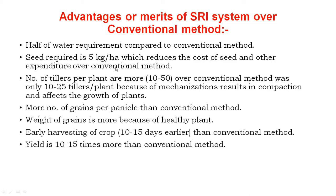In SRI, 5 kg per hectare of seed is sufficient. The number of tillers per plant is more in SRI — up to 50 tillers — compared to only 25 tillers per plant in conventional. There are more grains per panicle, and heavier grain weight due to healthy plants. Early harvesting is 10 to 15 days earlier in SRI, and yield is 10 to 15 times more than conventional.